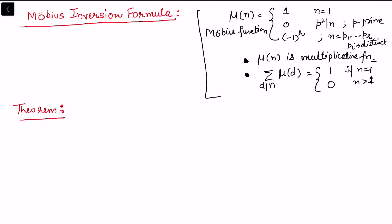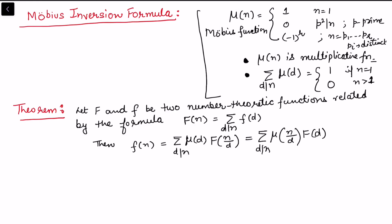The theorem of the Möbius inversion formula states: let F and f be two number-theoretic functions related by the expression F(n) = Σ_{d|n} f(d). Then small f(n) can be expressed as Σ_{d|n} μ(d) · F(n/d).